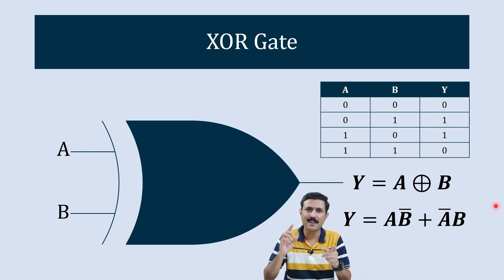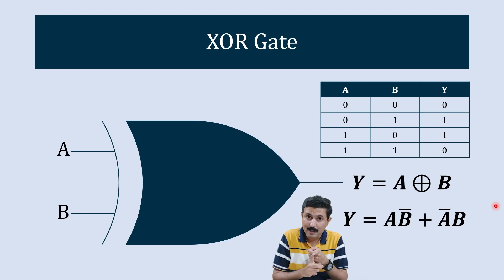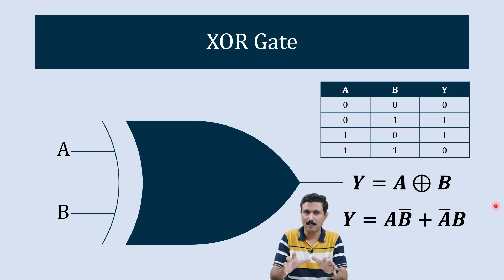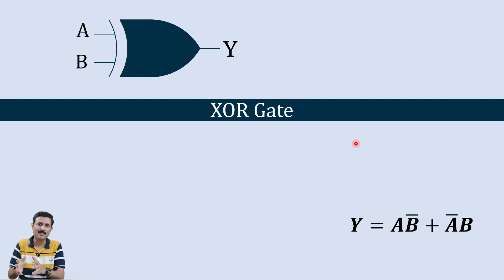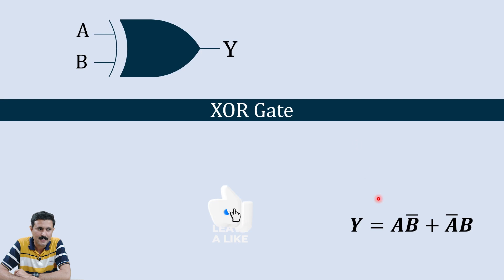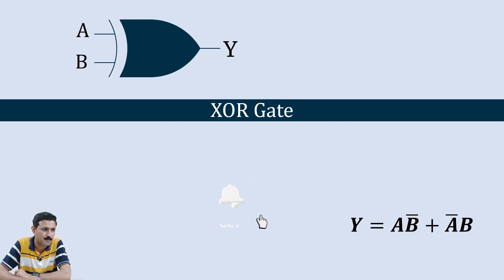Now I am going to solve all your questions regarding the truth table, the equivalent circuit of XOR gate, and the output equation. This XOR gate has two inputs A and B and one output Y. We are going to understand how to construct the equivalent circuit of XOR gate using its output equation. There are two inputs plus two inputs, so we require four inputs total.